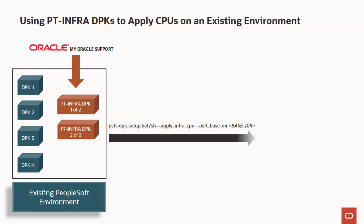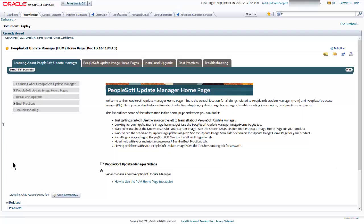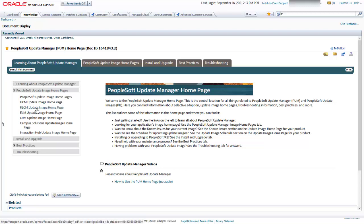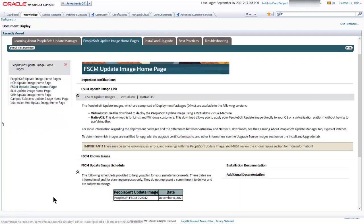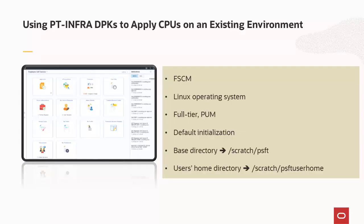When you run the DPK setup script with the options apply-infra-cpu and psft-base-dir, it stops the domains, applies the bundled CPUs, and restarts the domains. The CPUs bundled with the PT-ENFR DPKs vary — in these demonstrations, that includes Oracle WebLogic and Java. To find the link for the PeopleSoft update image, go to the PeopleSoft Update Manager homepage in My Oracle Support and select the page for FSCM. On the Native OS tab, click the link for the image and download to a convenient directory. This demonstration installs a full-tier FSCM environment on a Linux VM and then updates with the PT-ENFR DPKs.